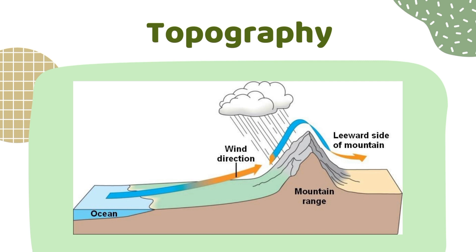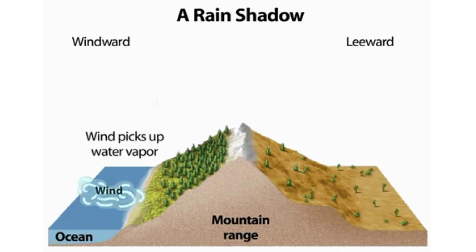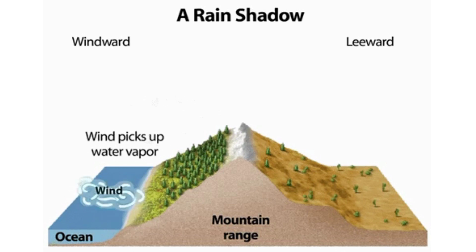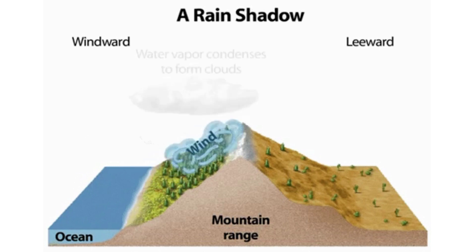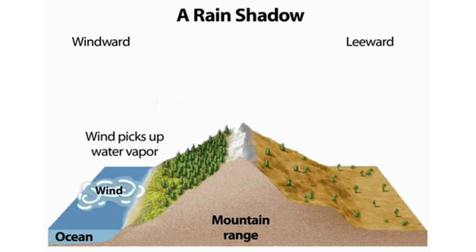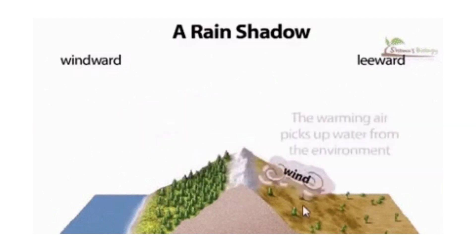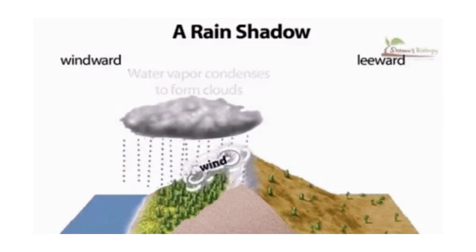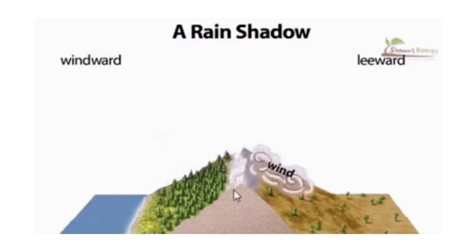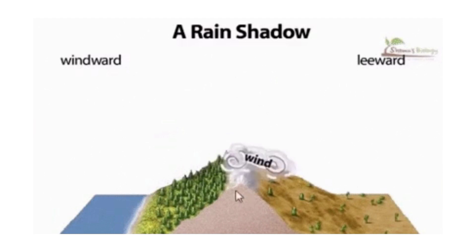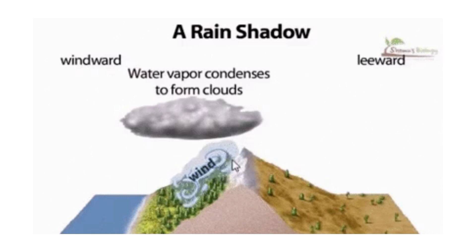The next factor is topography. One topographic feature that affects climate is a mountain. Moist wind coming from the sea rises up the mountain, because temperature decreases as altitude increases, and water vapor eventually condenses, producing precipitation. Since this is the side of the mountain facing the wind, it is called the windward side. The wind loses its moisture by the time it reaches the peak and flows down the other side, called the leeward side. Air absorbs heat and becomes warm and dry, making the area near the leeward side dry with less precipitation — this dry region is called the rain shadow. Vegetation there includes desert plants and grasslands.